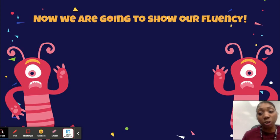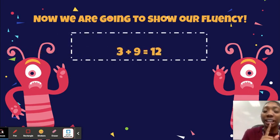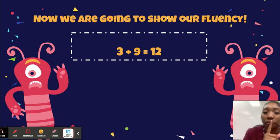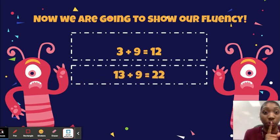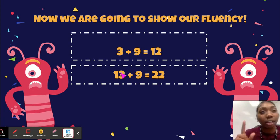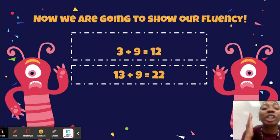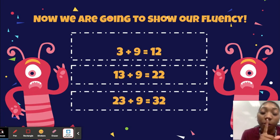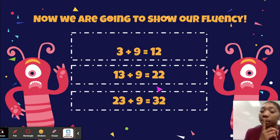Now let's continue with fact fluency and try to find a pattern. If we have three plus nine: nine, ten, eleven, twelve — so three plus nine is twelve. If we know that three plus nine is twelve, what happens if we do thirteen plus nine? Thirteen is just adding ten more to three, so I add ten more to twelve and get twenty-two. And if I do twenty-three plus nine, I add ten more: twenty-two plus ten is thirty-two. Great job, you are so smart.